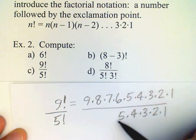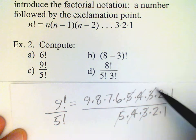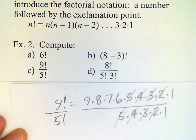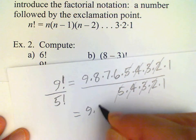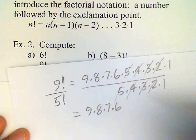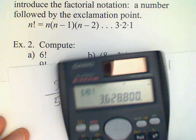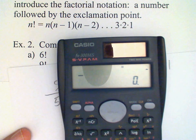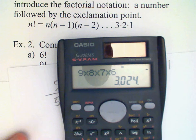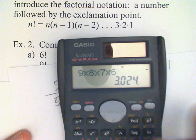And so we see that all these factors will cancel. And so our answer then is just 9 times 8 times 7 times 6, which turns out to be 3,024.